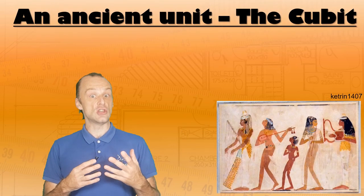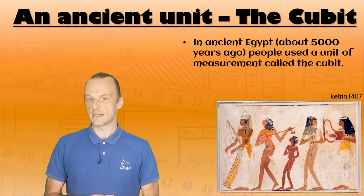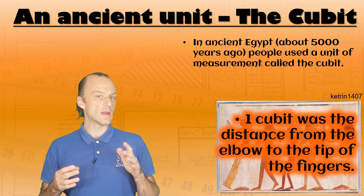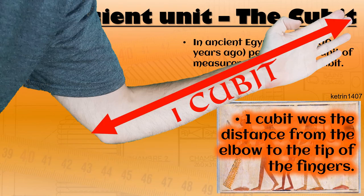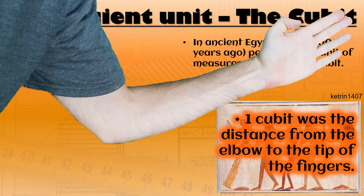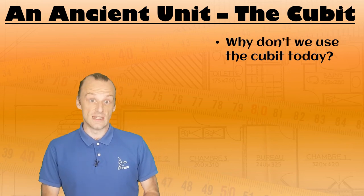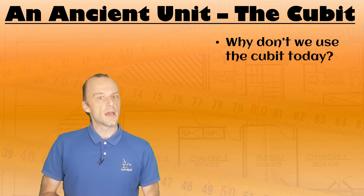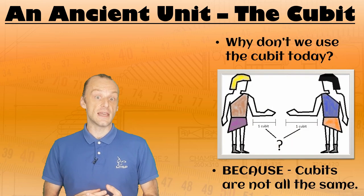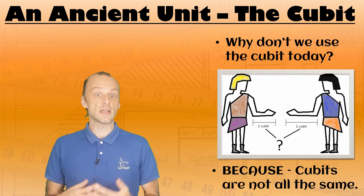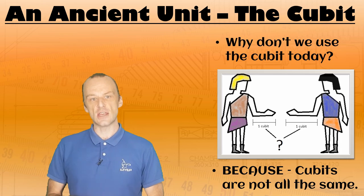One ancient unit was the cubit, which was used in ancient Egypt around 5,000 years ago. One cubit was the distance from the elbow to the tips of the fingers. But why do you think people don't use the cubit today? You can pause when I ask a question if you want time to think, but the reason we don't use cubits today is because cubits are not standardized. People can have shorter and longer forearms, and that changes the unit.